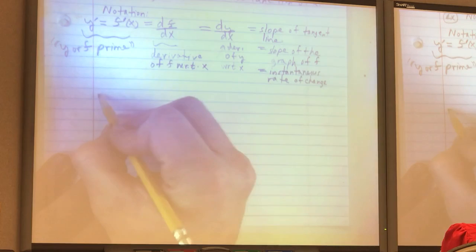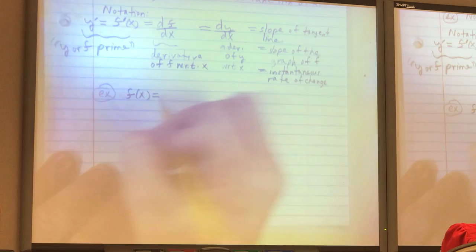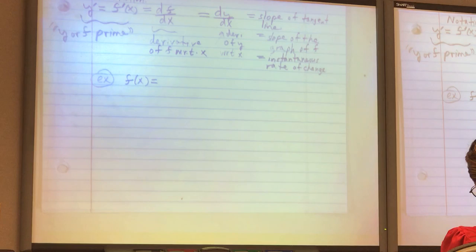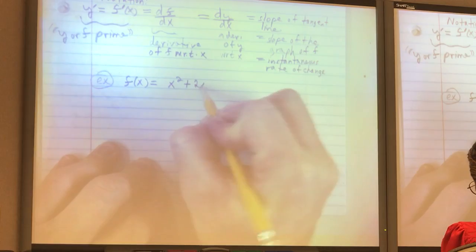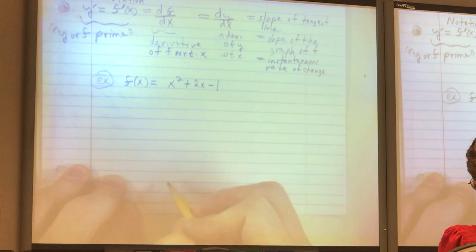Let's say that f of x equals, I had a good one here. I don't want to make it, like I said, too complicated. Let me just do x squared plus 2x. I guess I could put a minus one or something there. So, the derivative.